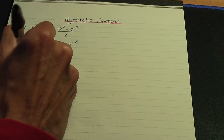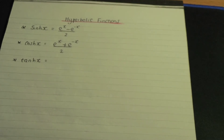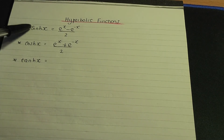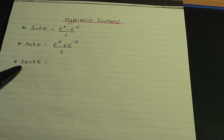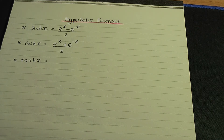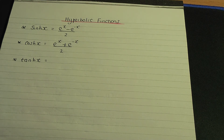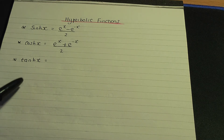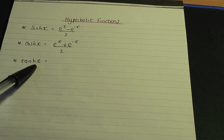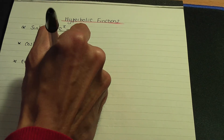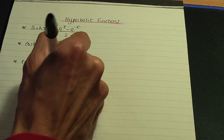And there is hyperbolic tan. As I said, they're similar in terms of names — hyperbolic sine, hyperbolic cosine, hyperbolic tan, just as there is trigonometric sine, cosine, and tan. They're also similar in other ways: in trigonometry, tan is sine over cosine, and hyperbolic tan, in a similar way, is hyperbolic sine over hyperbolic cosine.